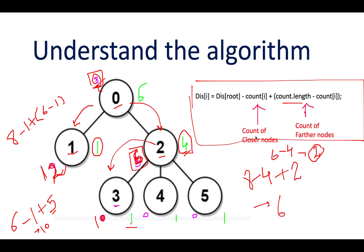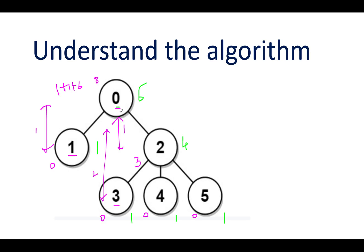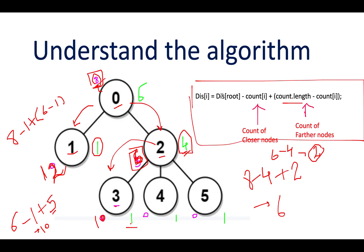The time complexity: the preprocessing using post-order traversal takes O(n), calculating the subtree node counts and distances also takes O(n), and finding the actual distances using pre-order traversal is again O(n). The overall time complexity is O(n). Without much ado, let's move on to the coding section.